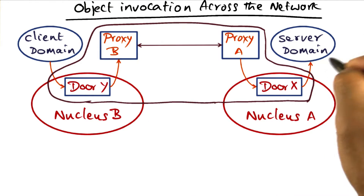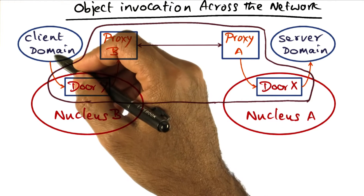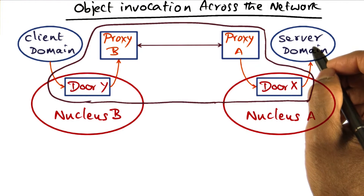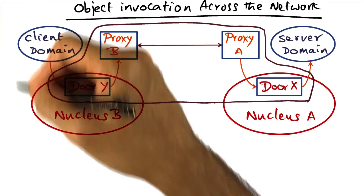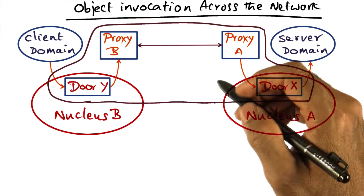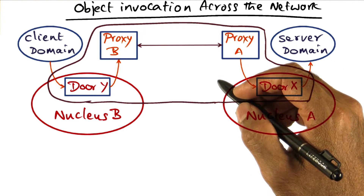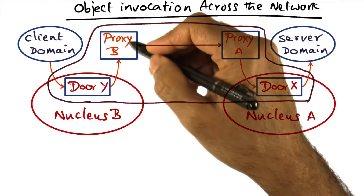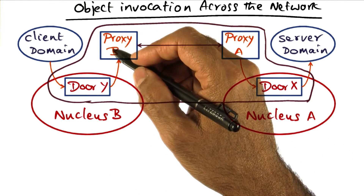The client domain may be over here, and the server domain may be on a different node on the local area network. Object invocation between client and server across the network is extended using network proxies. On the client box, there is proxy B, and on the server box, there is proxy A. Proxies can be potentially different for connecting to different servers, so this client may talk to this server using this proxy, and may talk to a different server using a completely different proxy.